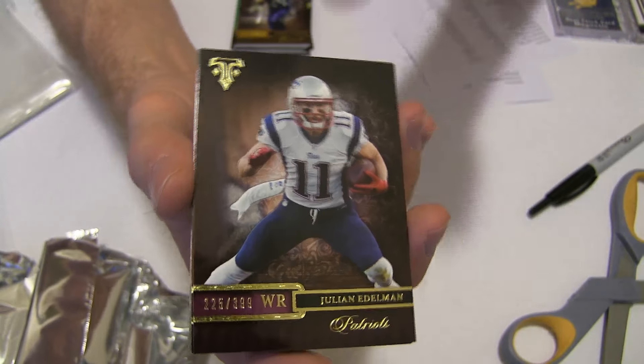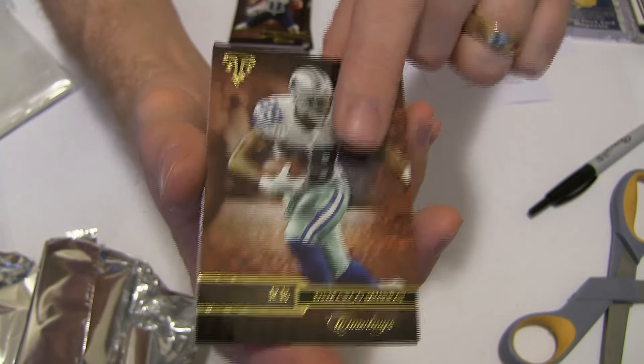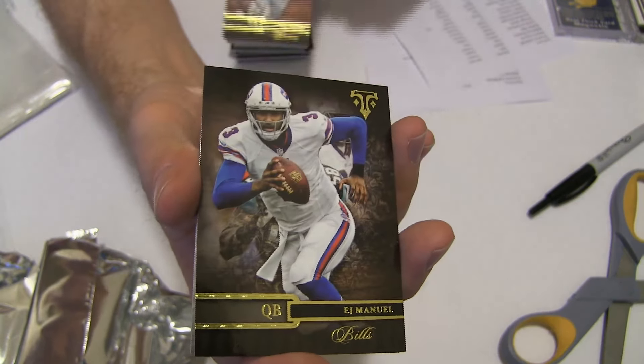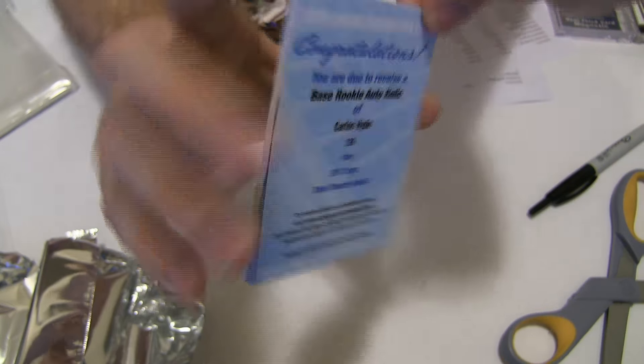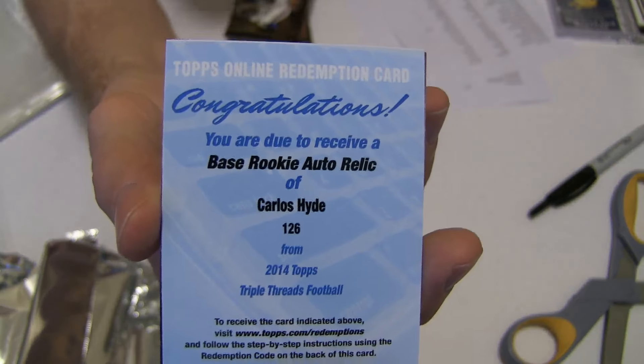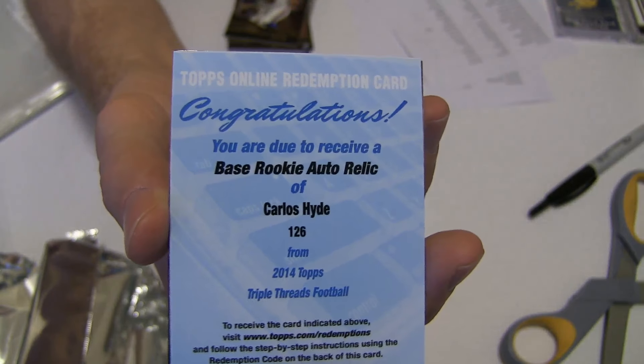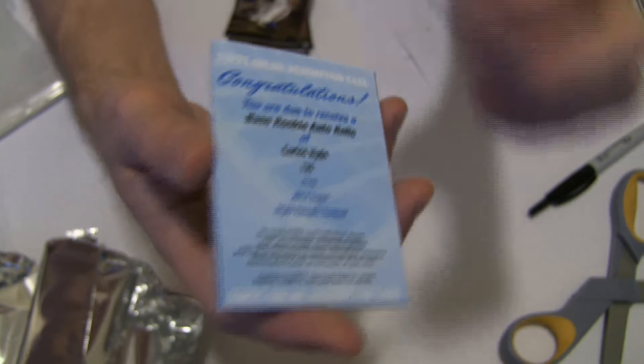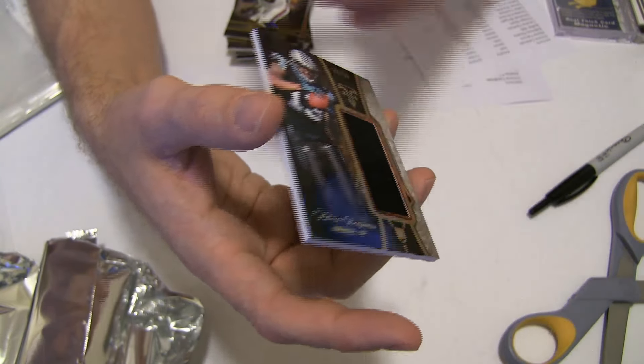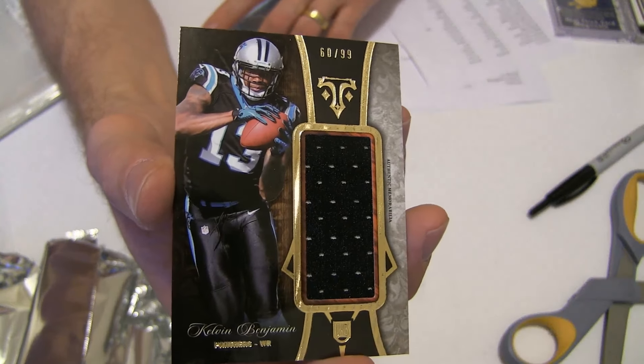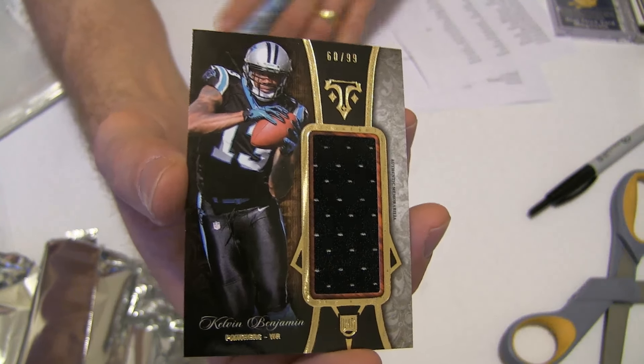Edelman 399. We got Murray, Welker, EJ. A nice auto jersey, Carlos Hyde, going to Michael H-O-L. And we got a Kelvin Benjamin rookie jersey to 99 going out to Marquita.